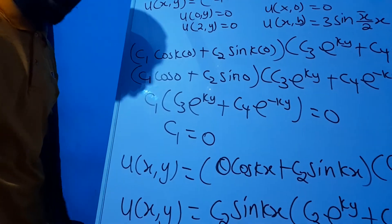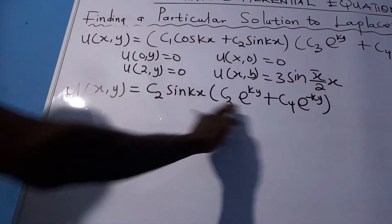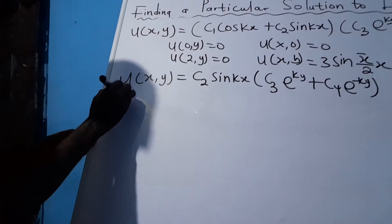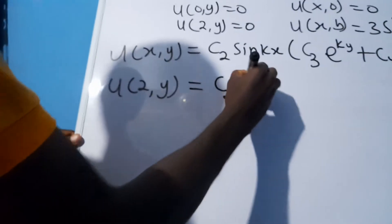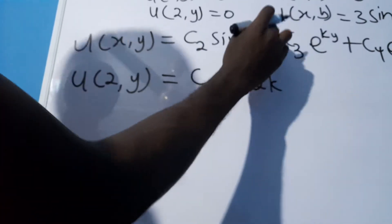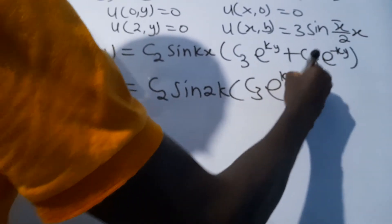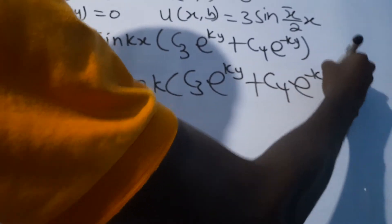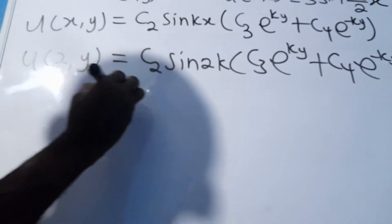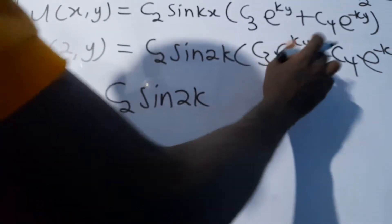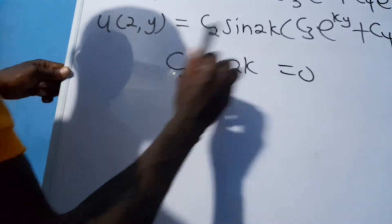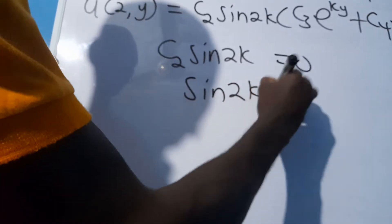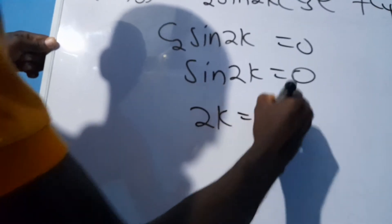Now we substitute the second boundary condition u(2,y) = 0. Anywhere we see x we substitute 2, giving: c2·sin(2k) · [c3·e^(ky) + c4·e^(-ky)] = 0. Dividing both sides by the exponential bracket and then by c2, we get sin(2k) = 0. So 2k = sin⁻¹(0).